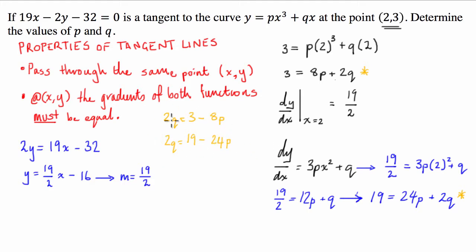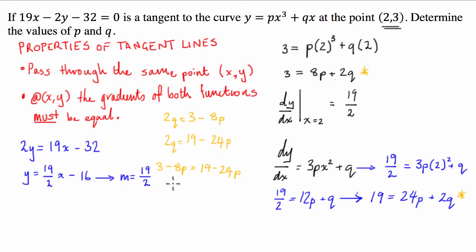Since both expressions equal 2q, we set them equal to each other: 3 minus 8p equals 19 minus 24p. Taking the p terms to the left and numbers to the right: negative 8p plus 24p equals 19 minus 3, so 16p equals 16, therefore p equals 1.